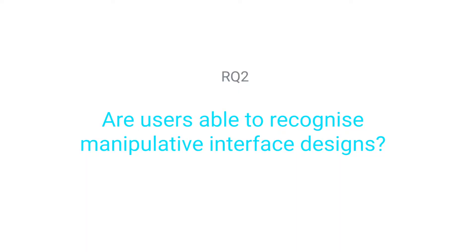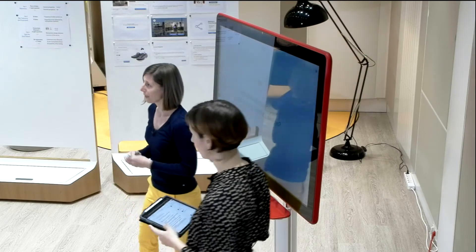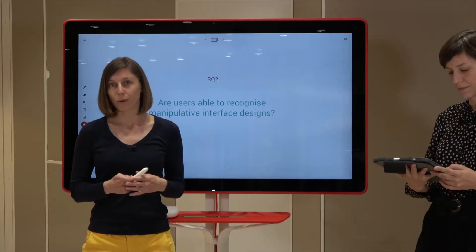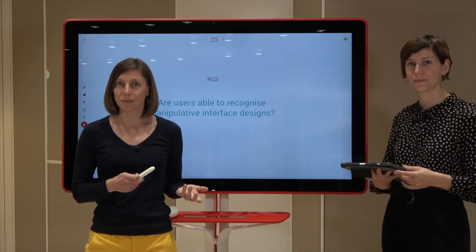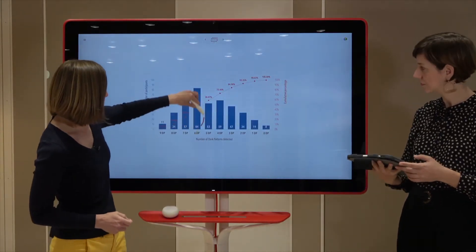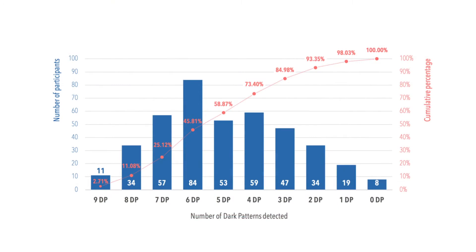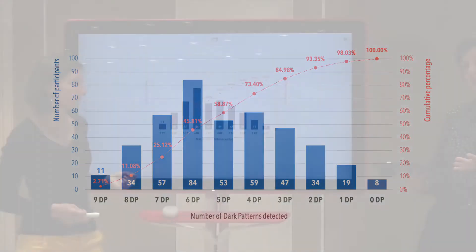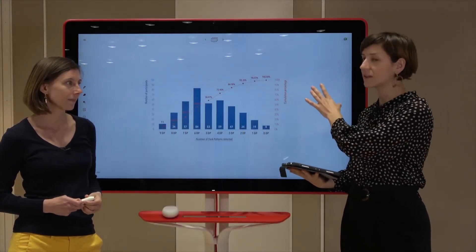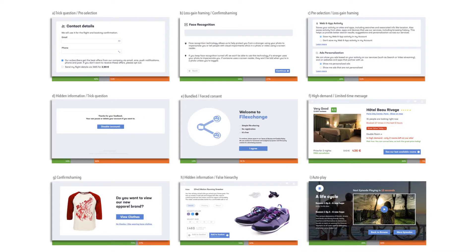For what concerns research question number two, we asked whether people were able to recognize dark patterns in the examples that we showed them. First of all, we qualitatively coded all the answers for our examples, and we coded whether participants recognized a dark pattern or not. And what we see is that nearly half of all participants recognized six, seven, eight, or all nine dark patterns. That's reasonably high as a result, so this means that people are generally able to recognize dark patterns. However, there are great variations depending on the dark pattern type — certain dark patterns seem to be more difficult to spot than others.